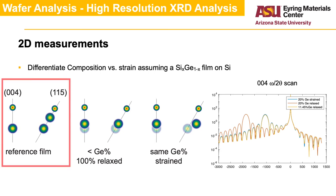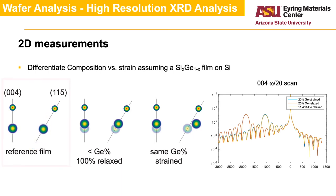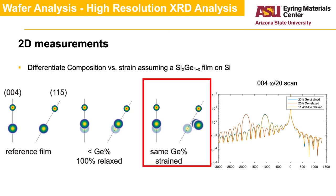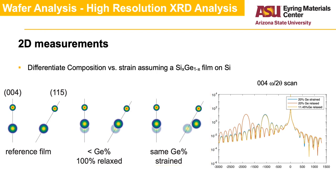In this example, if the sample is fully relaxed, the off-axis peak will move along the GSI line. But in a strained sample, the layer peak position will deviate from that line and shift towards the vertical. The closer it is to vertical, the more strained the film is. The off-axis data can then provide quantitative information on the strain, which further informs the composition analysis.